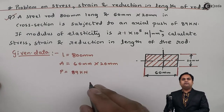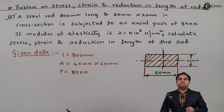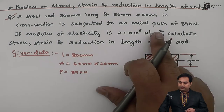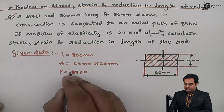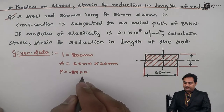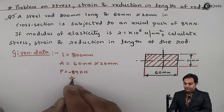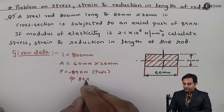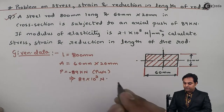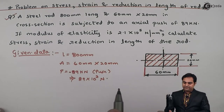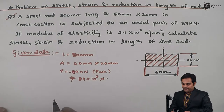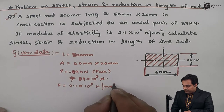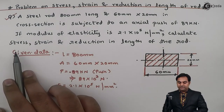The load is push type, which can be taken as negative because it is compressive and will produce compressive stress. We mostly take compressive stress as negative. However, in the problem we just require the magnitude, so I'll use the value of load as 89 × 10³ Newton, neglecting the sign. The negative sign indicates it is a push kind of load. Modulus of elasticity E is 2.1 × 10⁵ Newton per mm square.